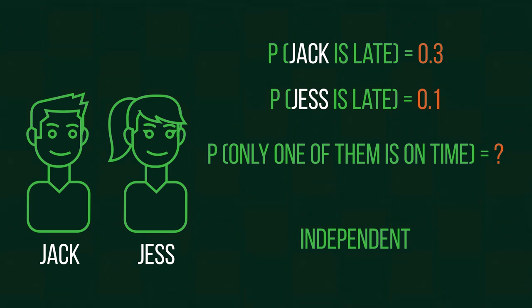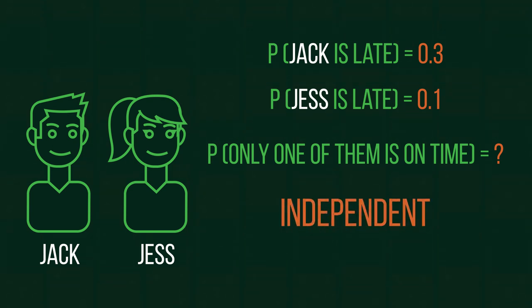So this question is an independent question, because the lateness of our first person, Jack, doesn't affect the lateness of our second, Jess. Now let's see how we would answer this probability question. If you would like to have a go first, pause now.